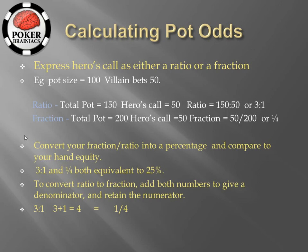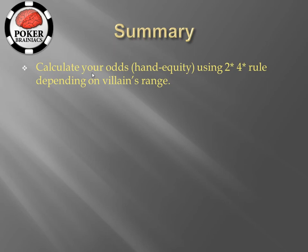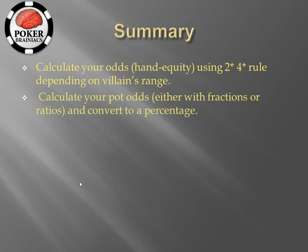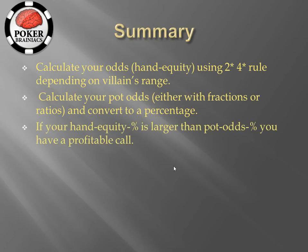The ratio and fraction methods are essentially identical — you may just find fractions easier to work with. If you're more comfortable with the ratio method, by all means use it as it is the most common method seen on forums. To summarize: calculate your odds or hand equity using the two times or four times rule depending on the street and villain's range, then calculate your pot odds using either the fraction or ratio method, convert to a percentage, and compare that percentage to your equity to decide if you have a profitable call.